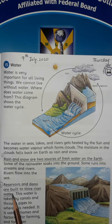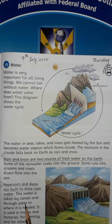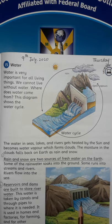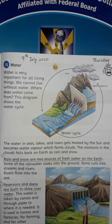Reservoirs and dams are used to store fresh water. This water can be taken by canals and through pipes to where it is needed — to homes, factories, and other places where water is used for various things such as cooking, washing, bathing, and for industrial purposes. This water is taken to different places through canals.